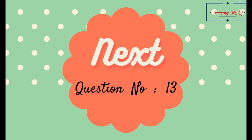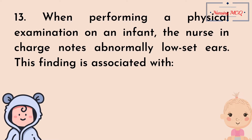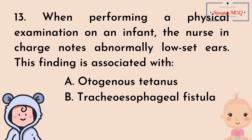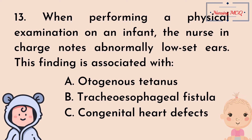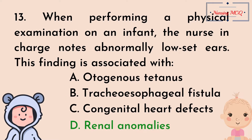Question number 13. When performing a physical examination on an infant, the nurse notes abnormally low-set ears. This finding is associated with: Option A, congenital tetanus; Option B, tracheoesophageal fistula; Option C, congenital heart defects; Option D, renal anomalies. The right answer is Option D: renal anomalies.